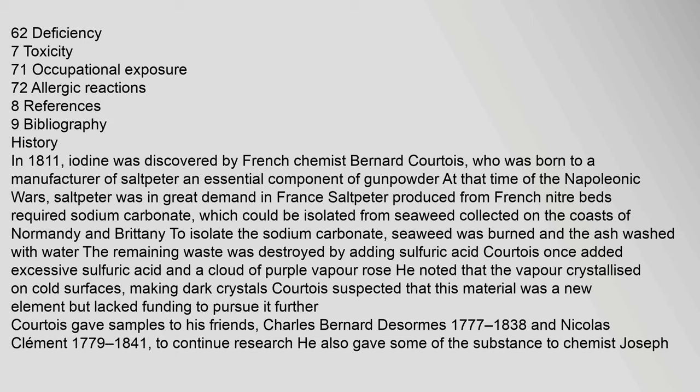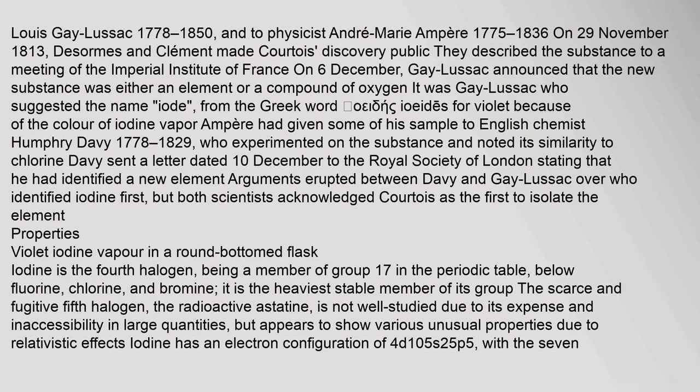Courtois once added excessive sulfuric acid and a cloud of purple vapor rose. He noted that the vapor crystallized on cold surfaces, making dark crystals. Courtois suspected this material was a new element but lacked funding to pursue it further. He gave samples to his friends Charles Bernard de Sormes (1777–1838) and Nicolas Clement (1779–1841) to continue research, and also gave some to chemist Joseph Louis Gay-Lussac (1778–1850) and physicist André-Marie Ampère (1775–1836).